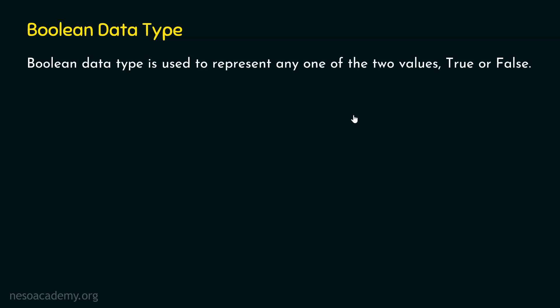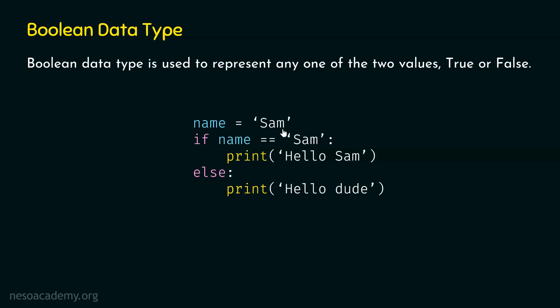Whenever we check a condition, we will always get either true or false value. It totally depends upon the condition we are checking. In order to make this concept concrete, let's consider one simple example. We have a program where name is equal to sam. This is a variable name and we are assigning the string sam to this variable. This is an assignment operator — it is used to assign some value on the right hand side to the left hand side. Here we have name as a label, and this label is given to the string sam. So in place of this string sam, we can use this label name in our code, and we are using it here while checking this condition.